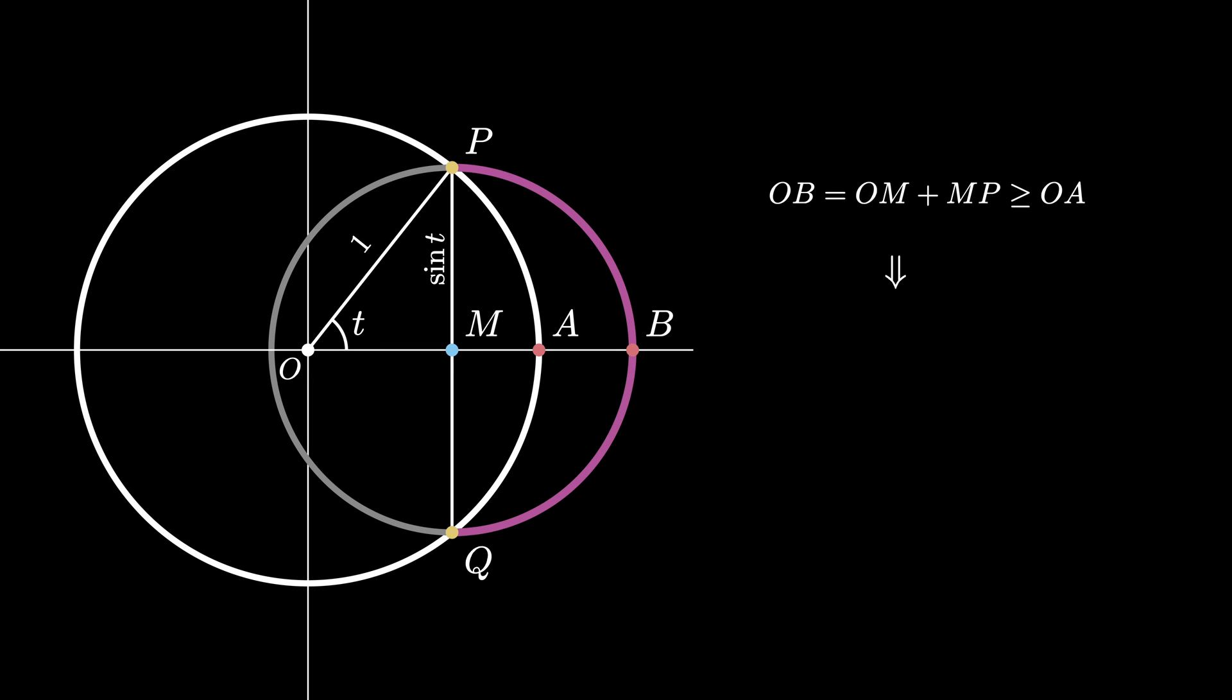From these facts, we can see that the arc length of the arc PBQ is greater than or equal to the arc length of the arc PAQ, and that in turn is greater than or equal to the length of the chord PQ.